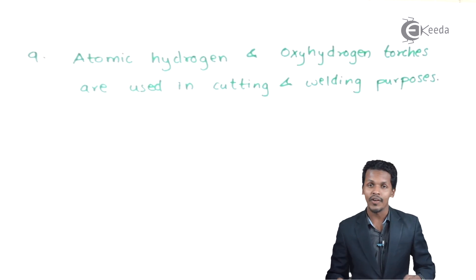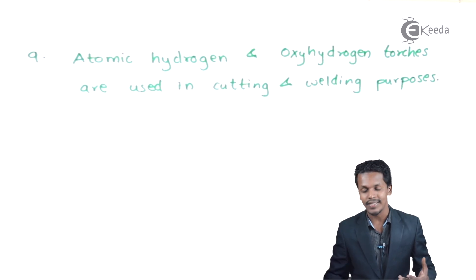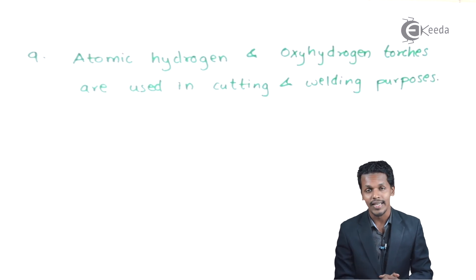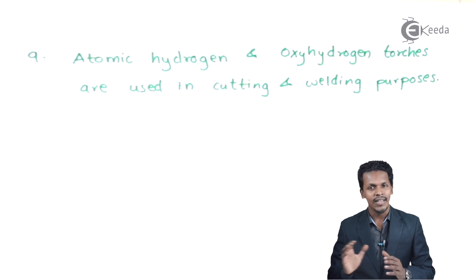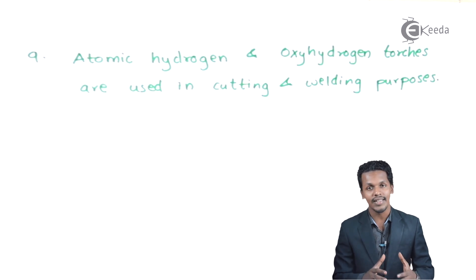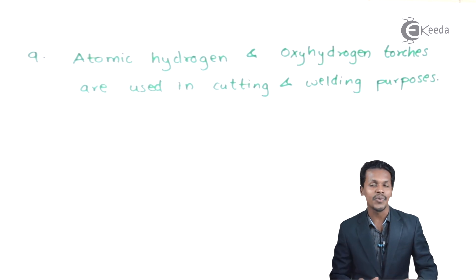Another use of hydrogen is in atomic hydrogen or oxy-hydrogen torches, which are used for cutting and welding metals. Just as hydrogen fuel produces tremendous amounts of energy, here too hydrogen is used to produce the intense energy required for cutting and welding metals. These are the uses of hydrogen — not only in chemistry labs but also in various real-world applications outside the lab.